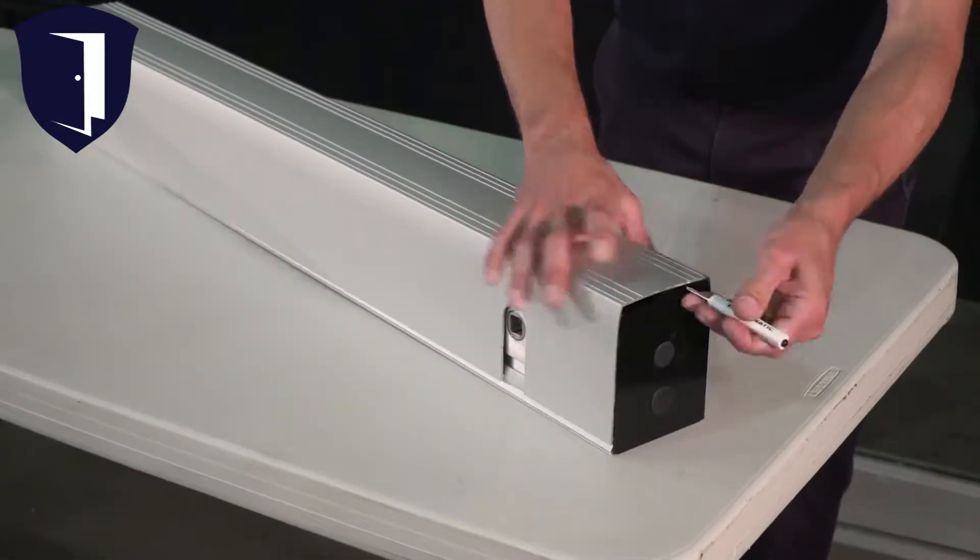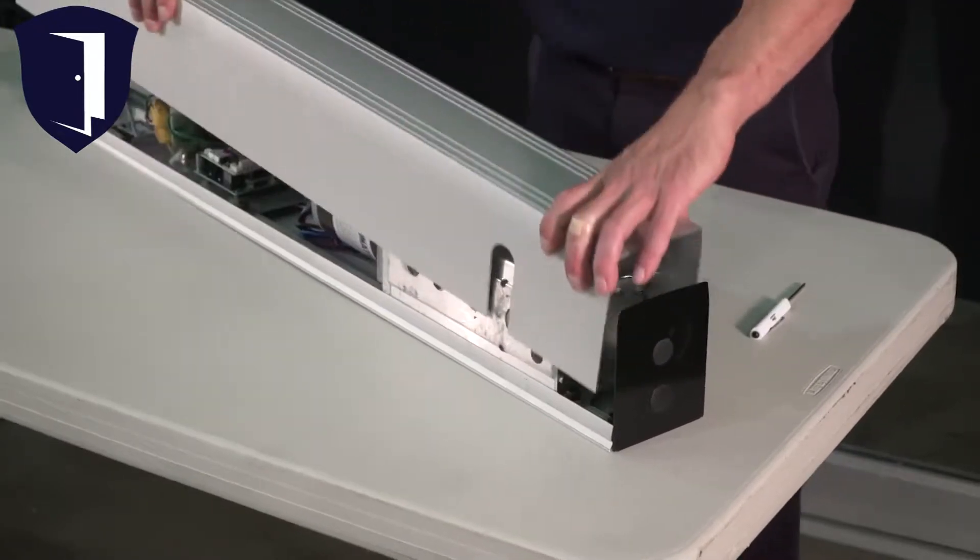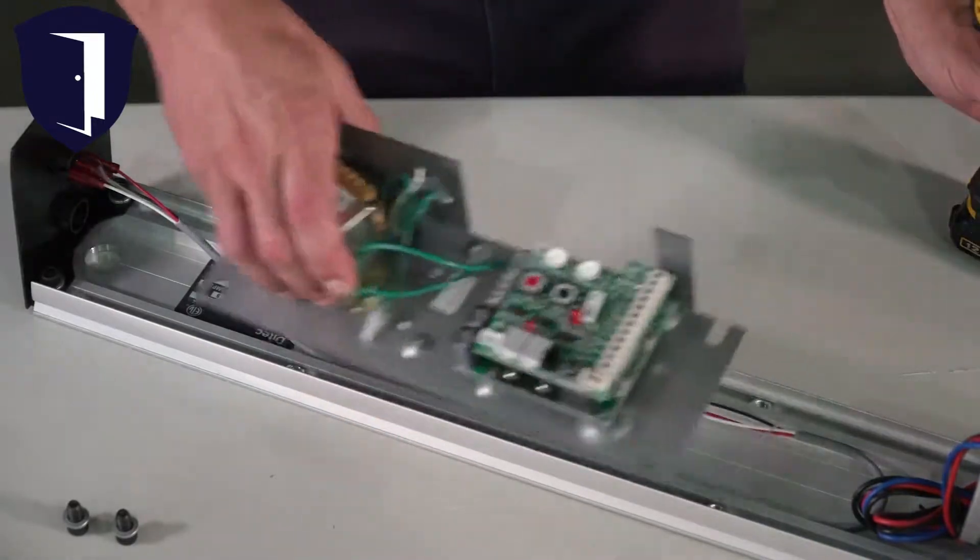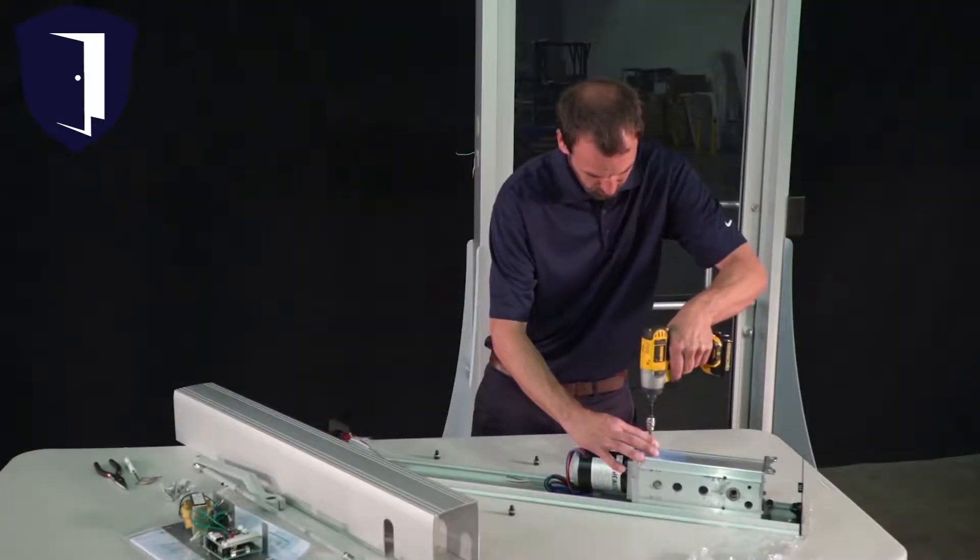Pop off the cover to reveal the motor and gearbox as well as the control board. Remove the screws from the four corners of the control board and set it aside. Then remove the motor gearbox assembly.